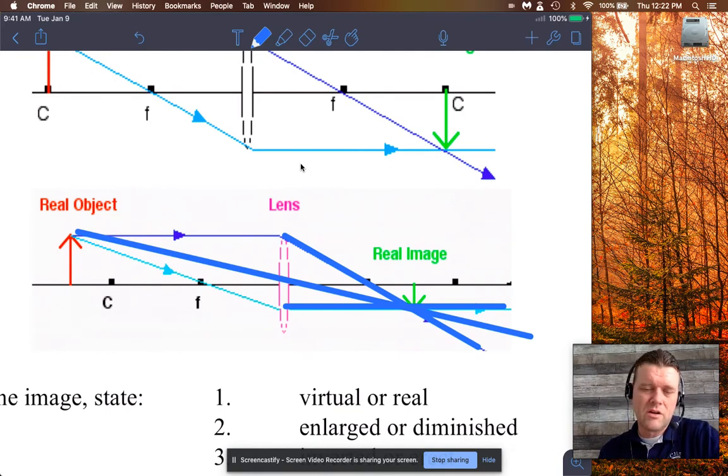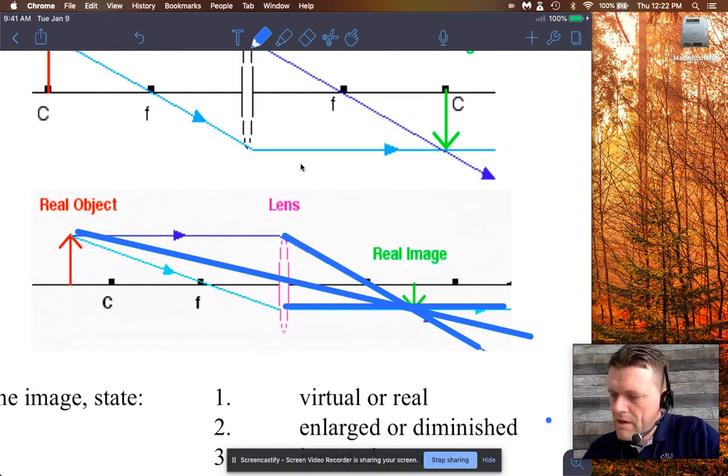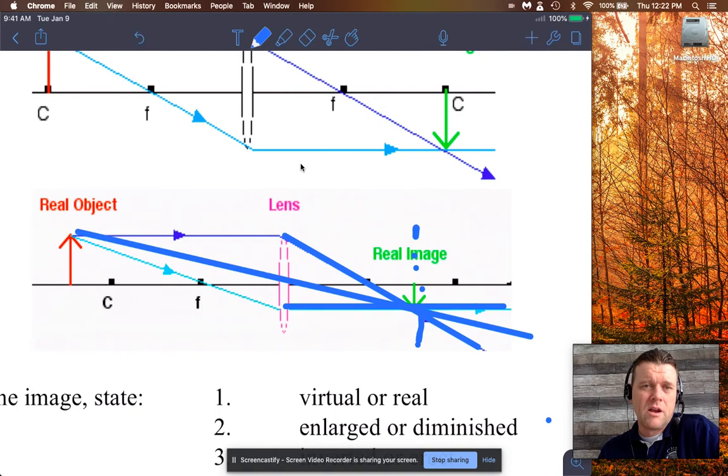So you can see here we have convergence, and what we make is a real image because there is physically light there. And again, if you stuck a sheet of paper right there you would see a flipped or inverted image. And so in this case, the image is real, it's inverted, and it's diminished. It's actually smaller than the actual object.